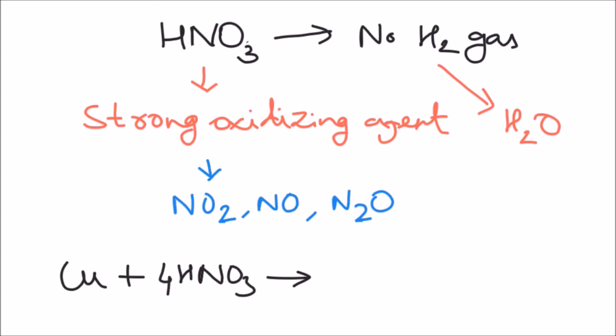Let's look at an example. When copper reacts with nitric acid it produces the salt copper nitrate plus nitrogen oxide plus water instead of hydrogen gas.